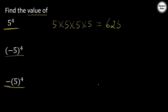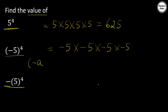Now here the base is minus 5, so we multiply minus 5 four times. There is a property: if a number is negative and the power is even, then multiplying that number an even number of times gives a positive answer. Here minus 5 is negative and the power 4 is even, so the answer will be positive: 625. If the power were odd, like minus 5 raised to power 3, the answer would be negative.